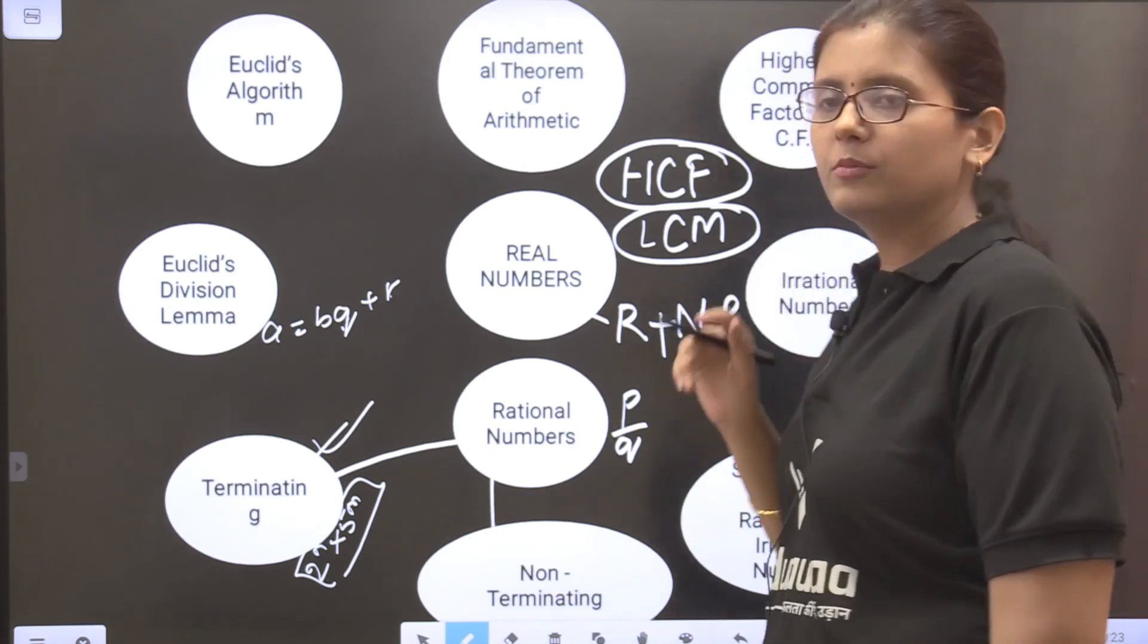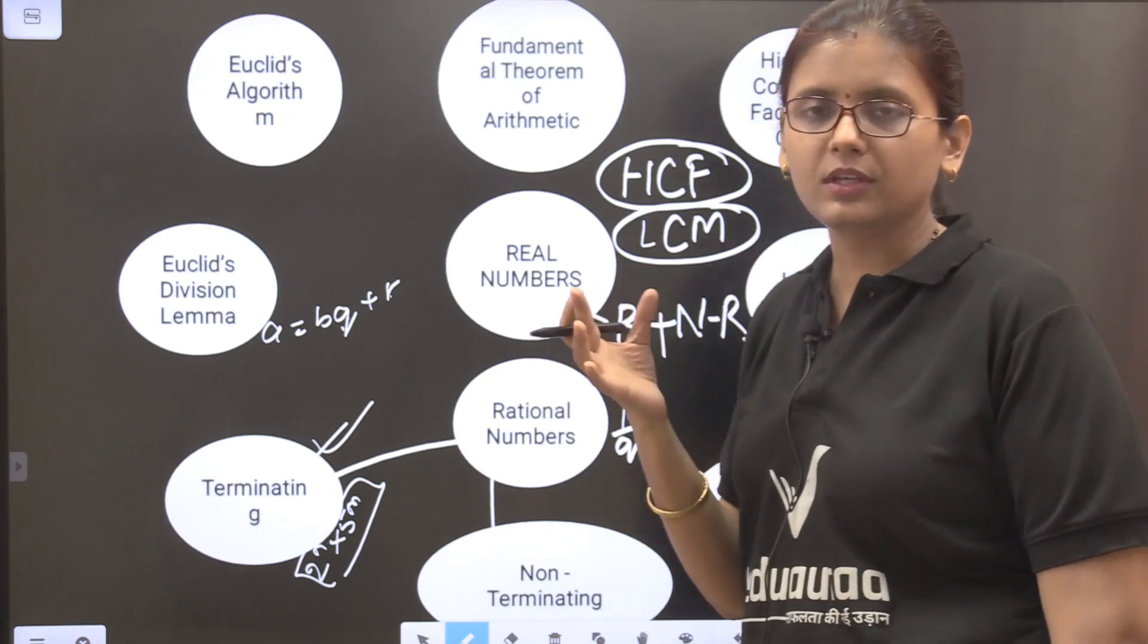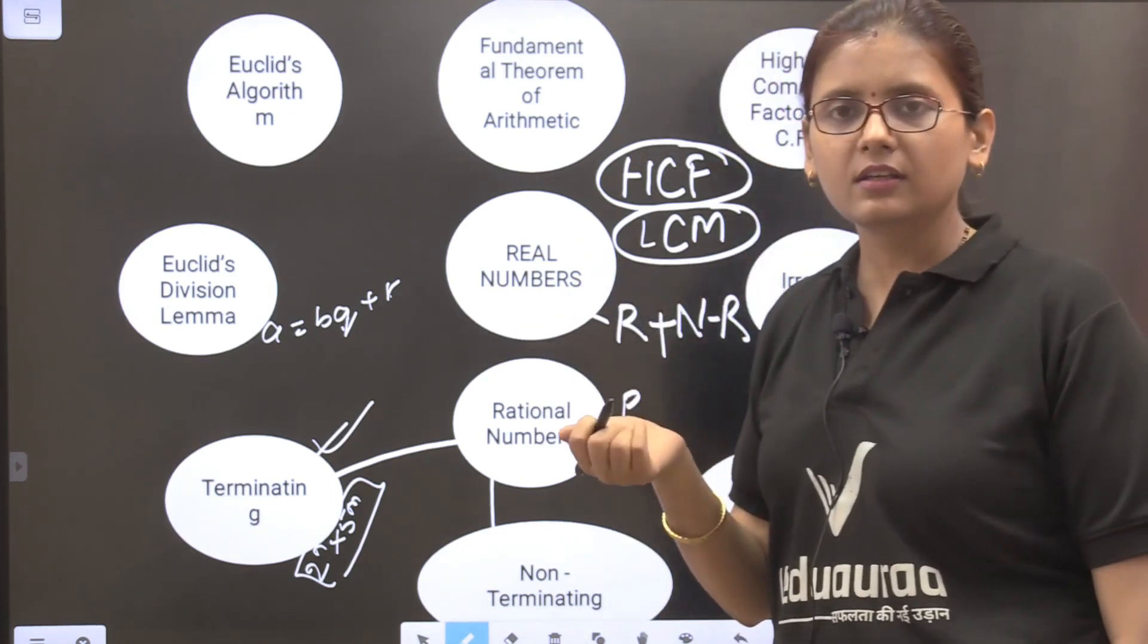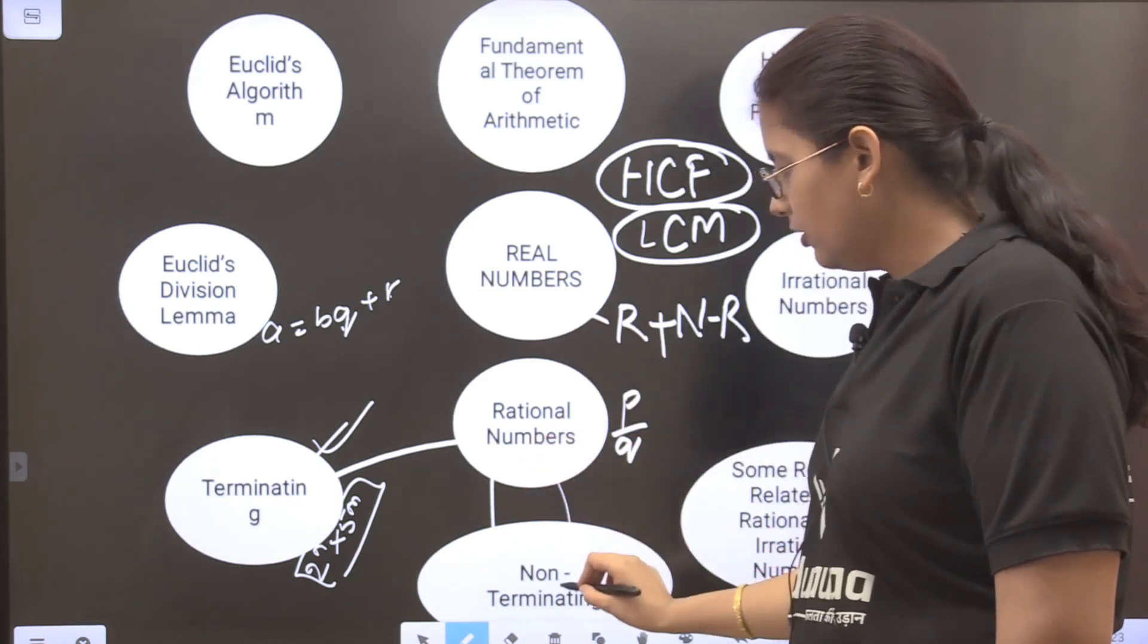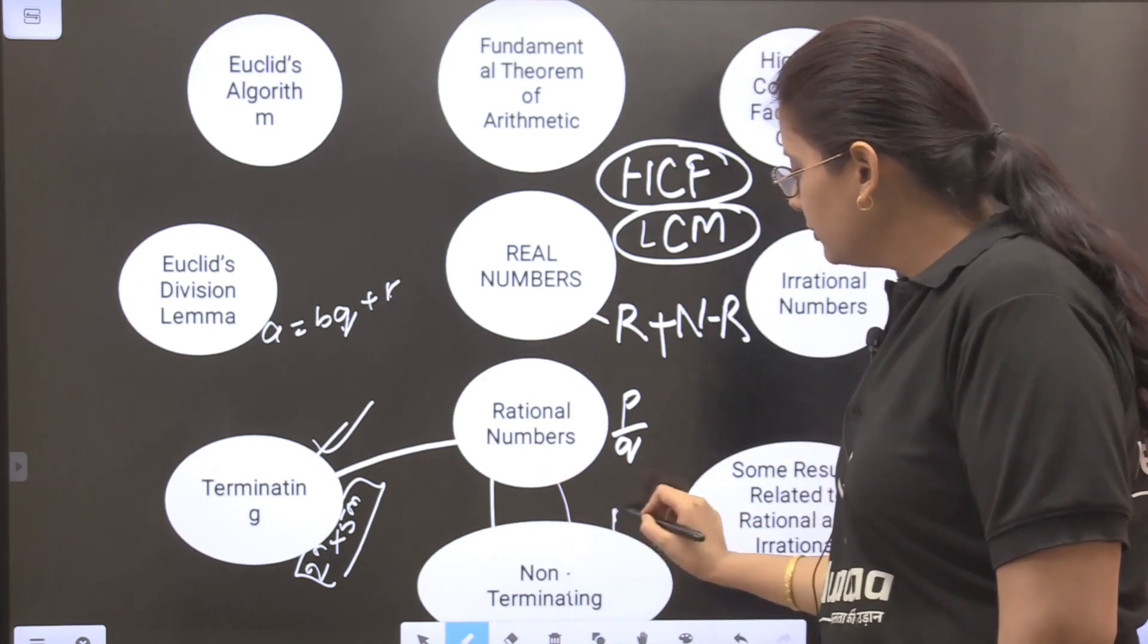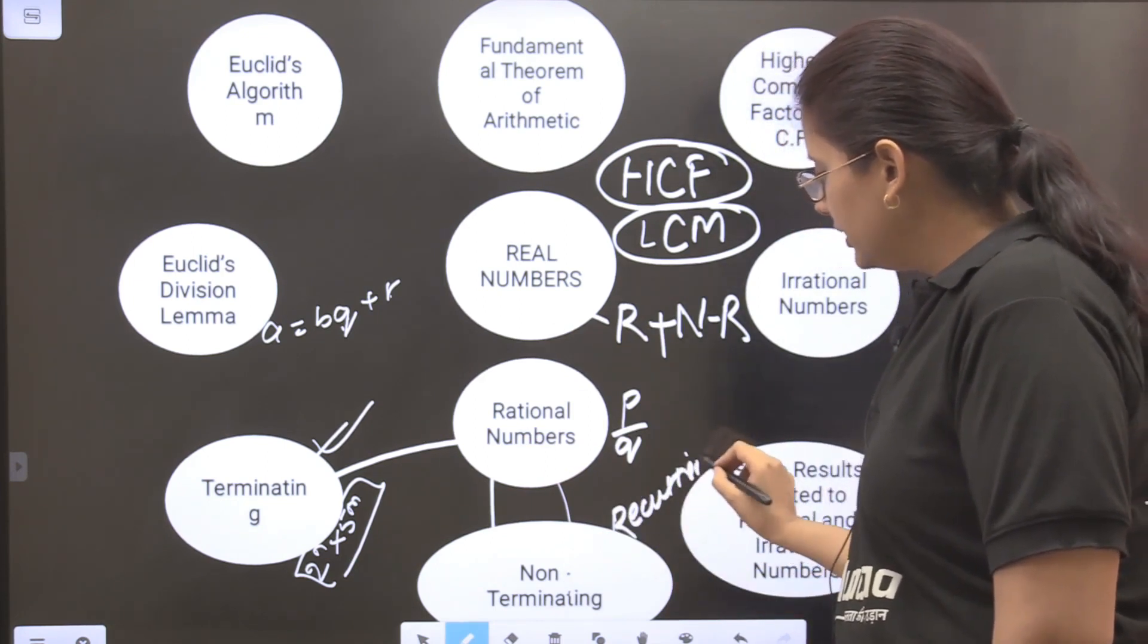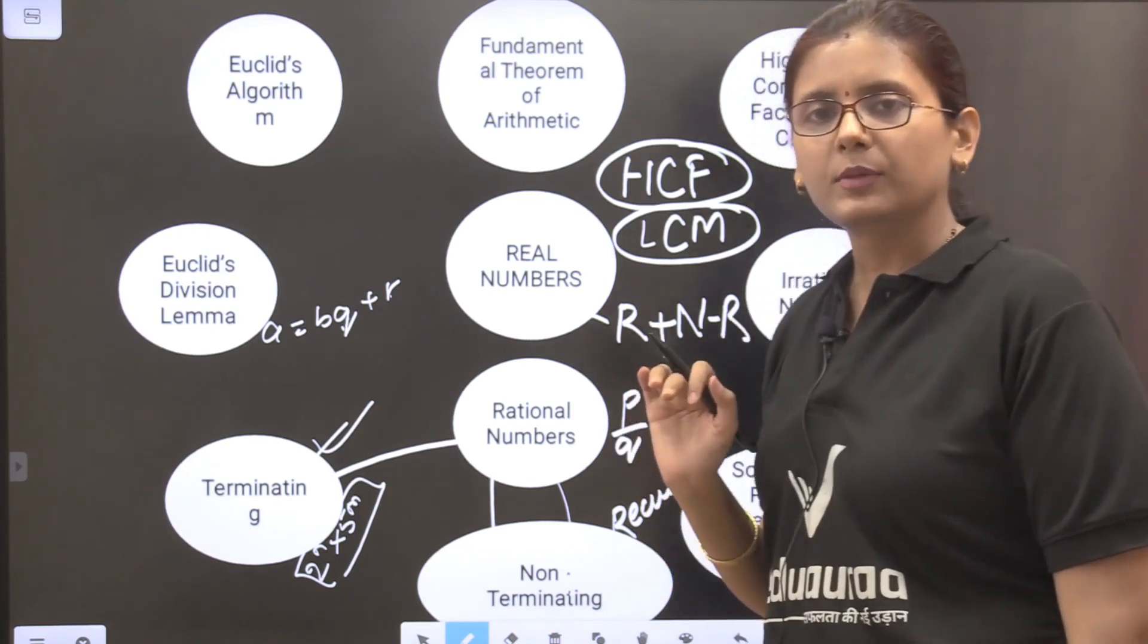Irrational numbers: they cannot be expressed in the form of P by Q or A by B and their decimal expansions are non-terminating and non-recurring. In rational numbers they can be non-terminating but they will be recurring, that means the digits will be repeating themselves, but here it will be non-recurring and non-terminating.